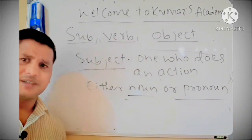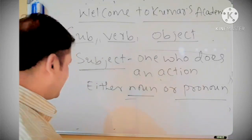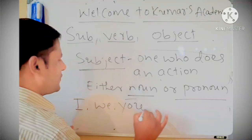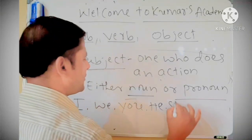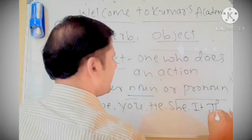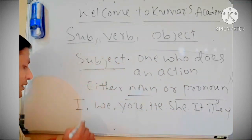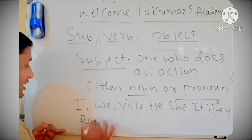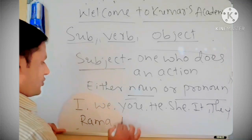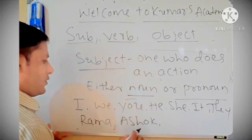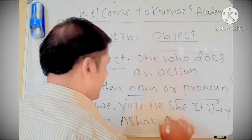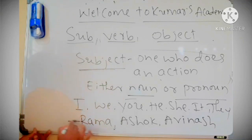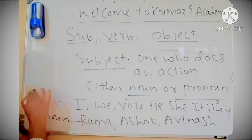Which are the subjects? I will write some subjects: I, we, you, he, she, it and they. They are subjects. And we can use a noun as a subject here — Rama, the name of a person; Ashok; Avinash. This is a noun and this is a pronoun.